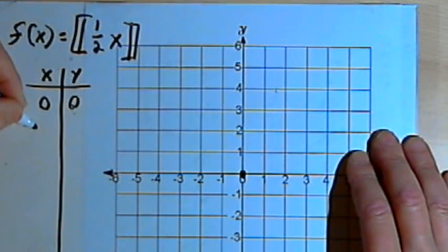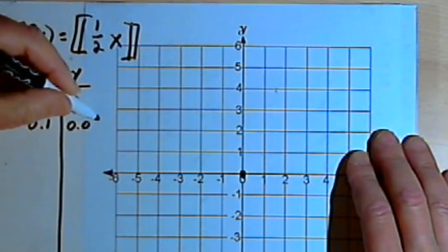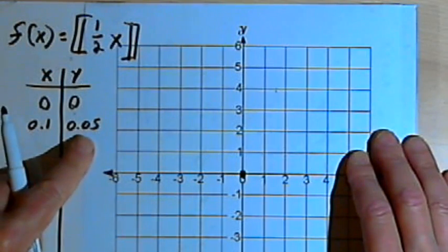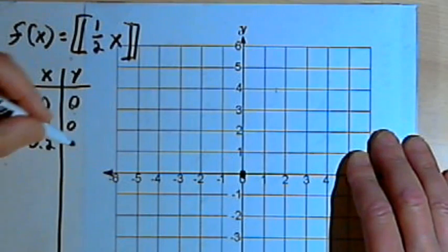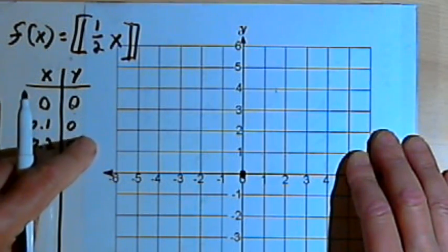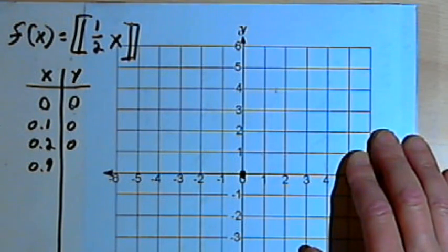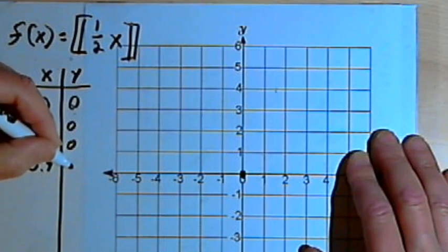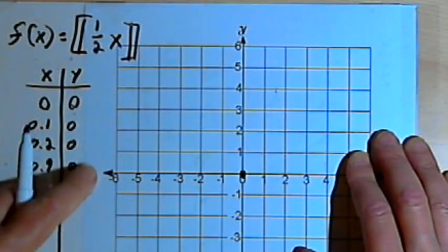If I increase the value of x, let's say I increase it to 0.1, then 1 half of that, 1 half of my x is going to be 0.05. But I want the greatest integer value of that, so I'm going to have to drop the decimal part of it, and I'm still at 0. The same thing would happen for 0.2. Let's jump up to 0.9. That's going to be 0.45. I'm still at 0 since I've got to drop the decimal part of this.